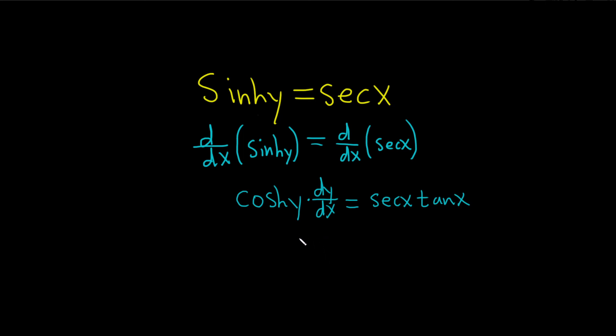We're almost done. We just have to solve for dy/dx. So we can do that simply by dividing both sides by the cosh of y. So divide here by the cosh of y and then divide this by the cosh of y. So we get dy/dx is equal to secant x tangent x, and all of this is being divided by the cosh of y.